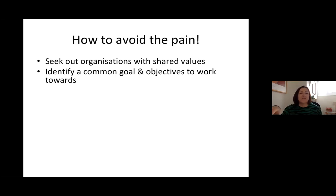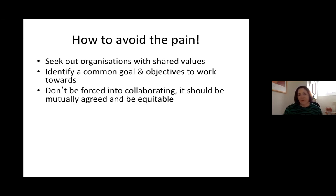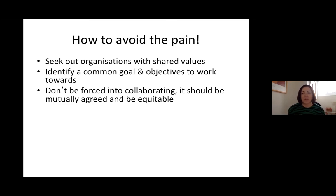Early on, identify common goals or objectives to work towards — then you can keep coming back to that if things start going wrong. If people start going off mission, you can say, 'actually, this is what we set out at the beginning.' Don't be forced into collaborating with people you don't want to work with — it should be mutually agreed. Do not be told by a funder or commissioner to collaborate with somebody. It needs to come from you, from your gut instincts about who you work with best.